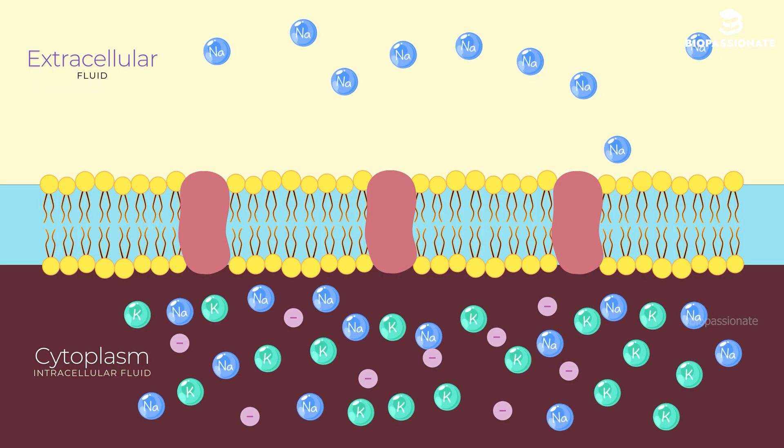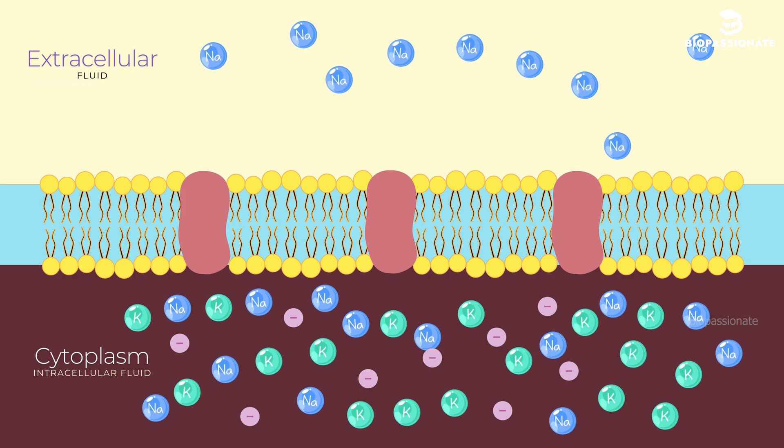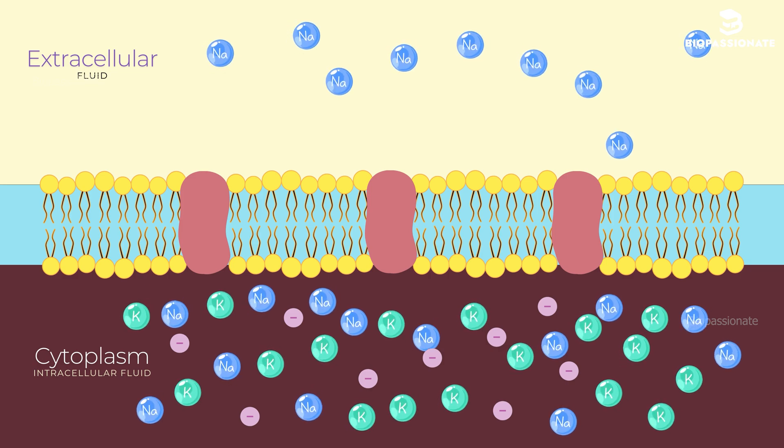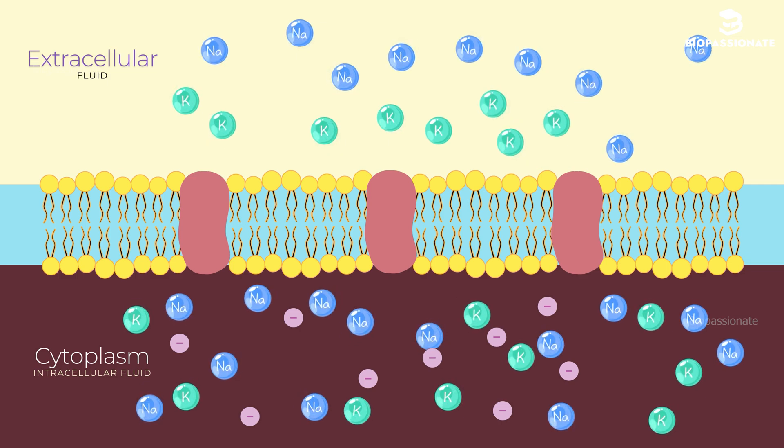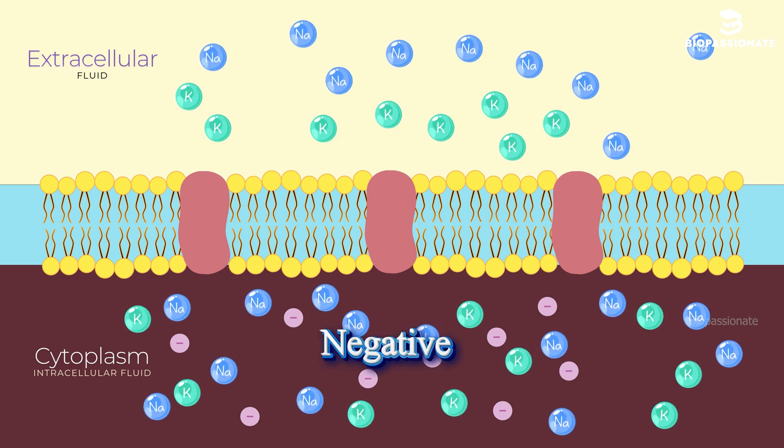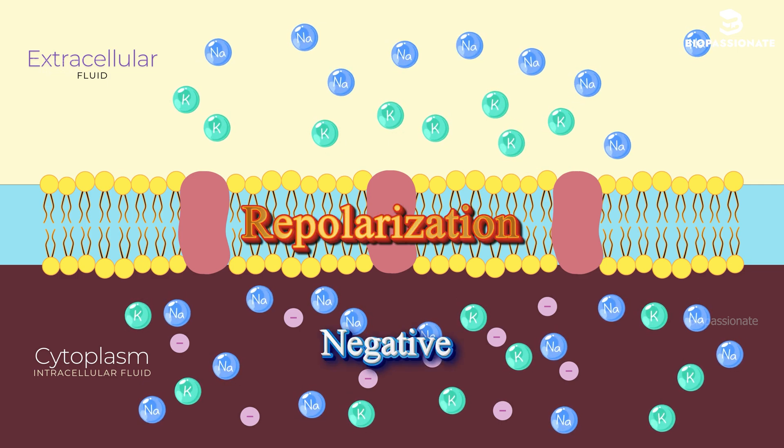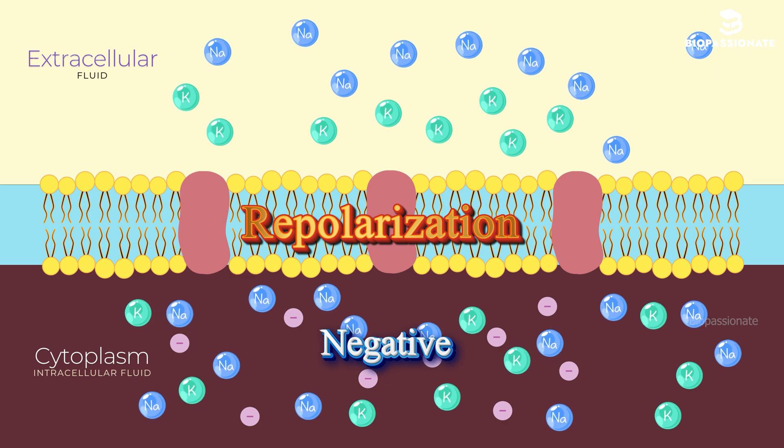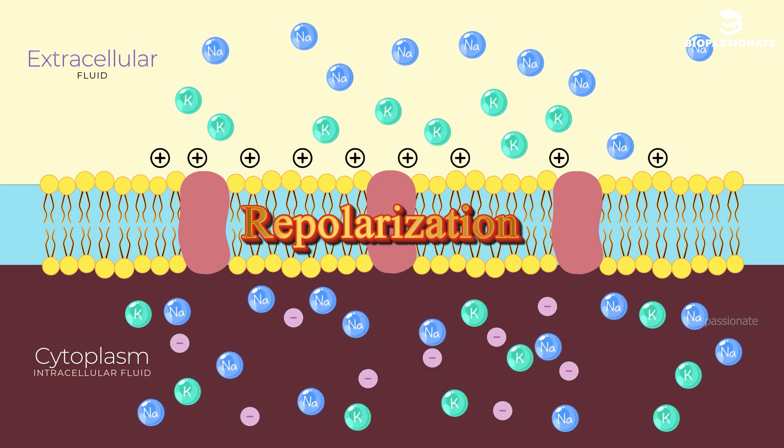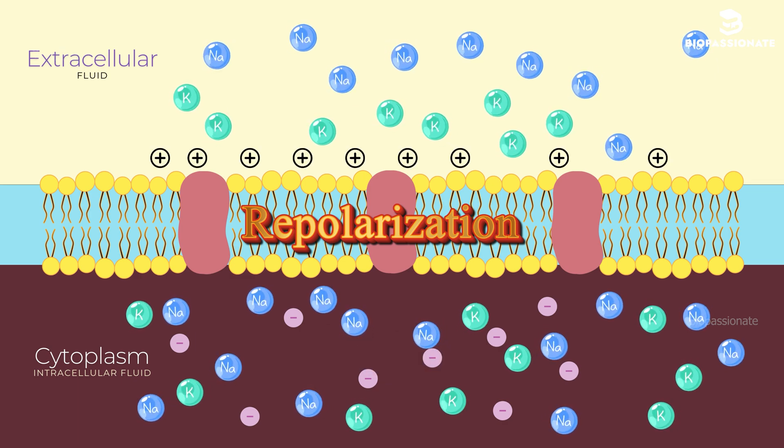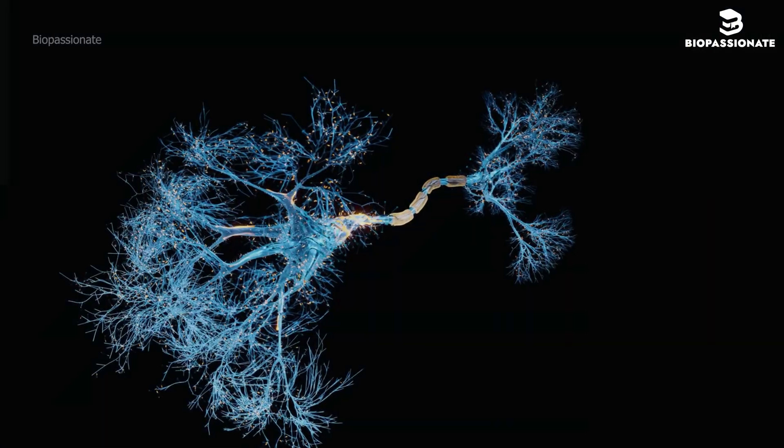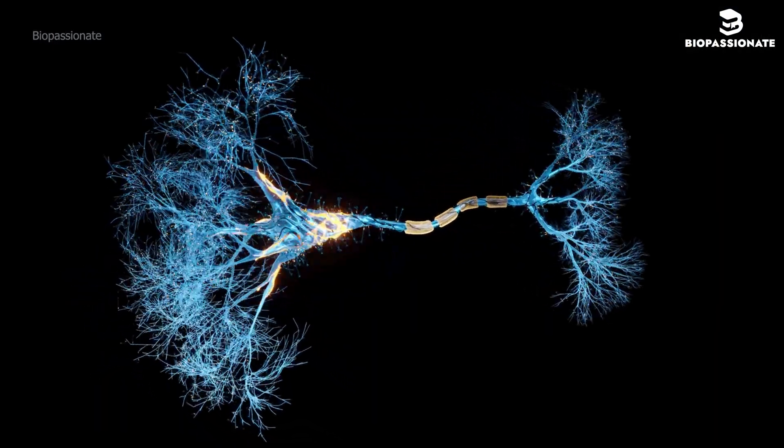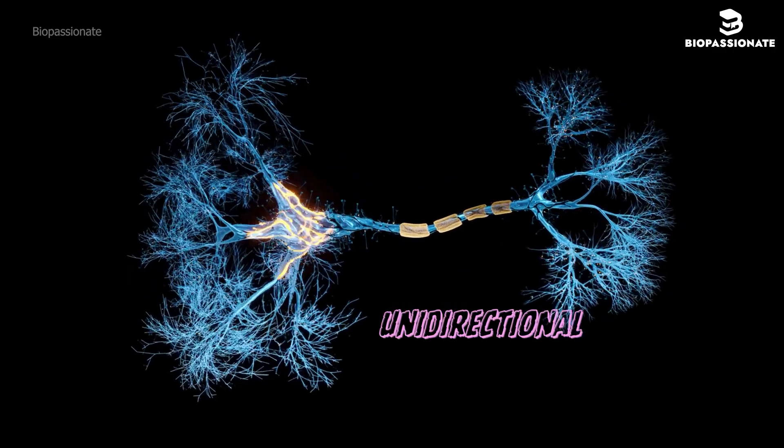After the action potential has passed, the neuron must reset. Sodium channels close and potassium channels open, allowing potassium ions to flow out, making the inside of the cell negative again. This is called repolarization. The neuron then returns to its resting potential, ready to fire again. During this reset period, known as the refractory period, the neuron can't fire another impulse immediately, ensuring that nerve impulses travel in one direction.